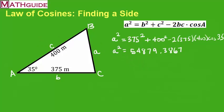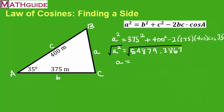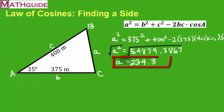I don't want A squared — I want A. So to undo the square, you take the square root of both sides. If I take the square root, I get 234.3. And everything's in meters, so this has to be in meters also. So that is side A.